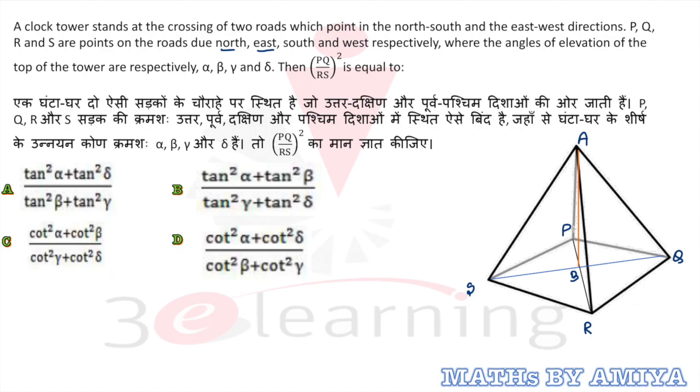Then we have beta. Angle of elevation means we have AB and B, Q is the point of the line on the base. So the angle of this value is nothing but given beta. Then this angle is given nothing but gamma. This angle is given nothing but delta.